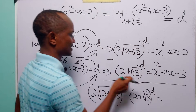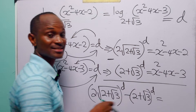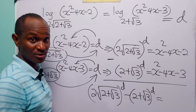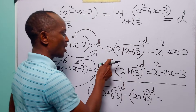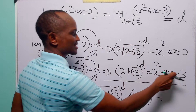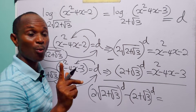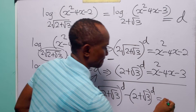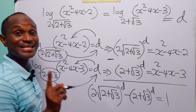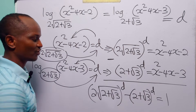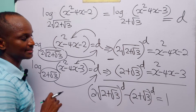Subtracting, the x² terms and the 4x terms cancel out — that is, minus 4x minus minus 4x is equal to zero — and minus 2 minus minus 3 is equal to 1. So the resulting equation we need to solve to find the value of d gives a right-hand side of 1.